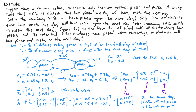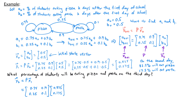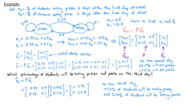Now let's find what percentage of students will be eating pizza and pasta on the third day of school, represented by state vector X2. Using x_{k+1} = P·x_k, we compute X2 = P·X1 = [0.75, 0.9; 0.25, 0.1] times [0.825, 0.175], which gives approximately [0.776, 0.224]. So on the third day, 77.6% of students will be eating pizza and 22.4% will be eating pasta.